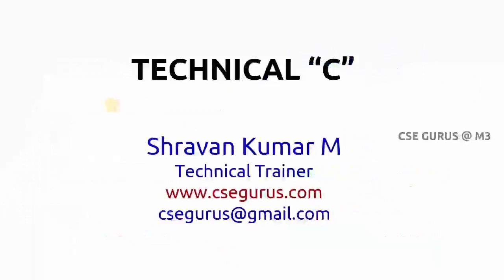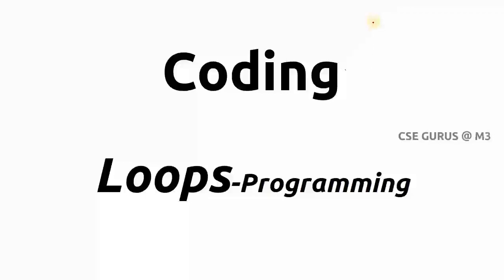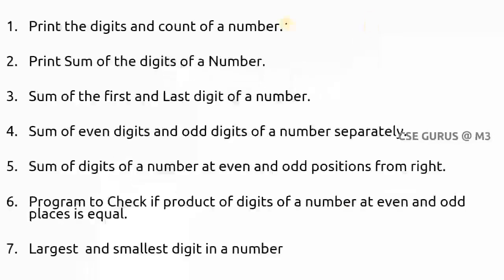Hi friends, welcome to the video lectures on Technical C by Shravan Kumar Mantri. We'll see questions one by one with execution and output. The first question is printing the digits and count of a number. Taking an example where n equals 523, the digits are 5, 2, and 3.